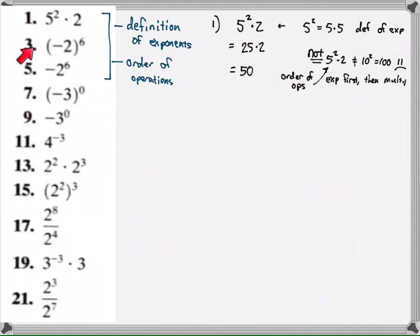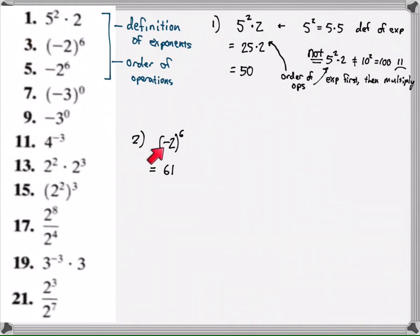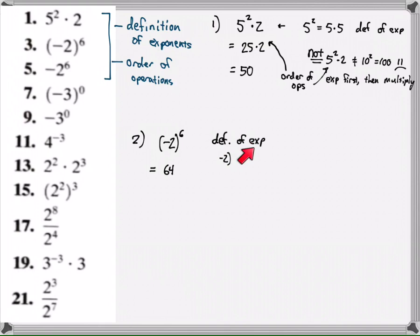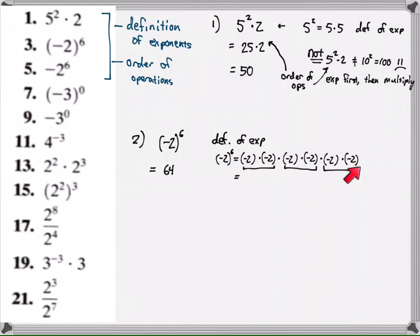In the second exercise, negative two to the sixth power is negative 2 times negative 2 times negative 2 times negative 2 times negative 2 times negative 2 — a total of 6 of them — equaling 64. That's the definition of exponents, meaning I have six of these factors all multiplied together. Six negative twos multiply to give three positive fours, which multiply together to give 16 times 4, or 64.